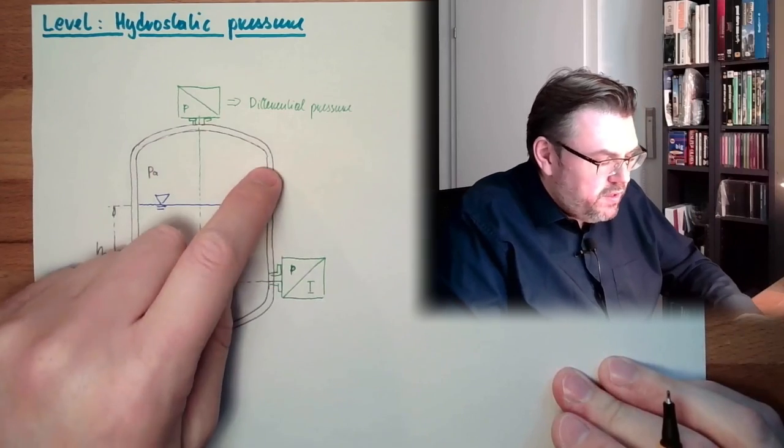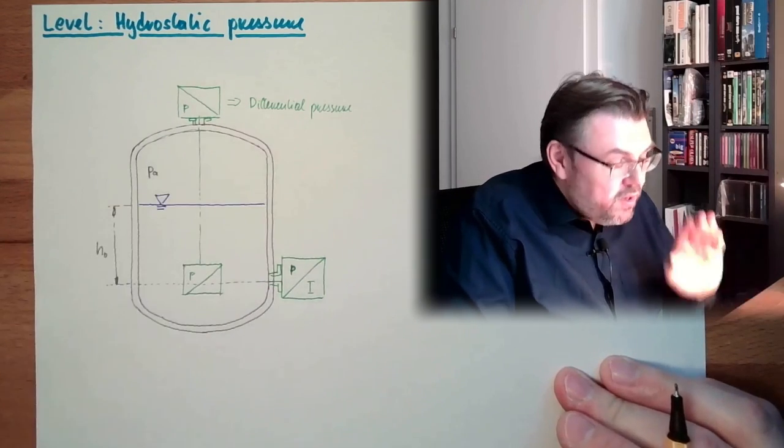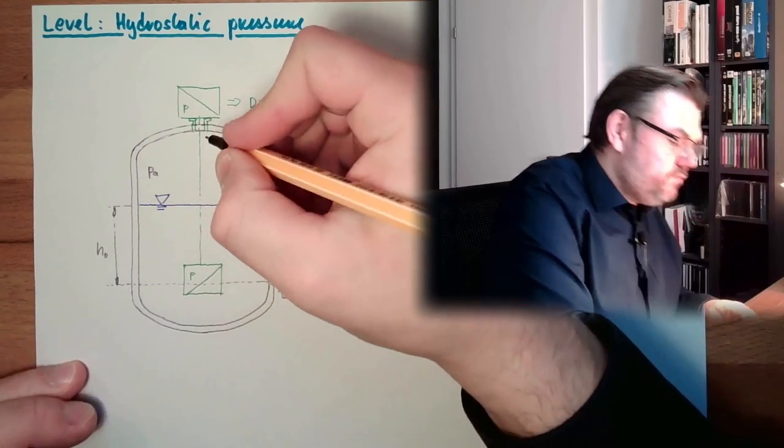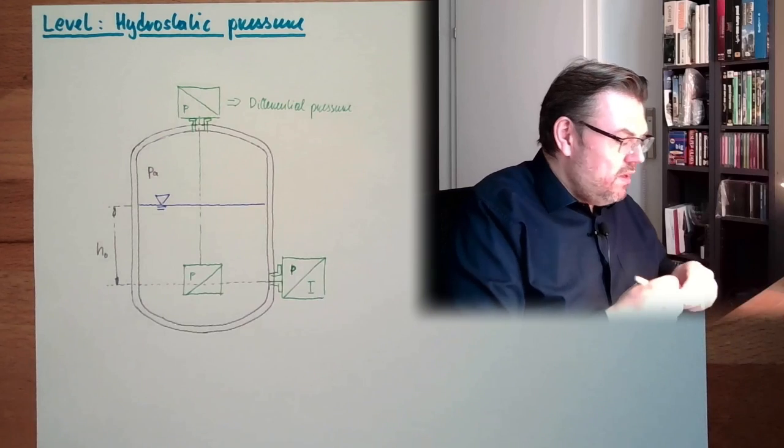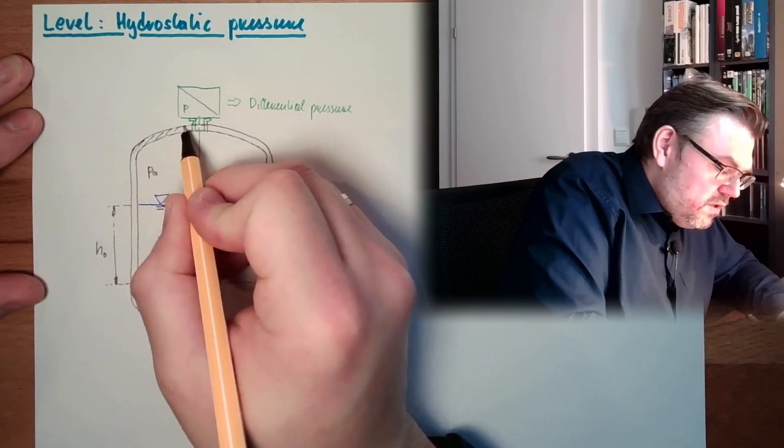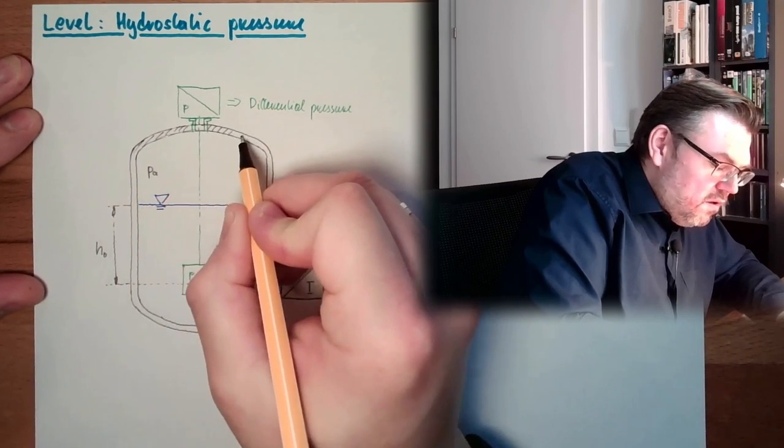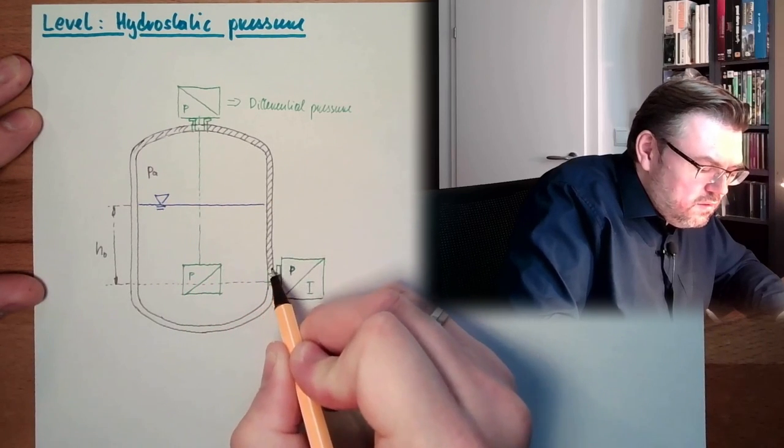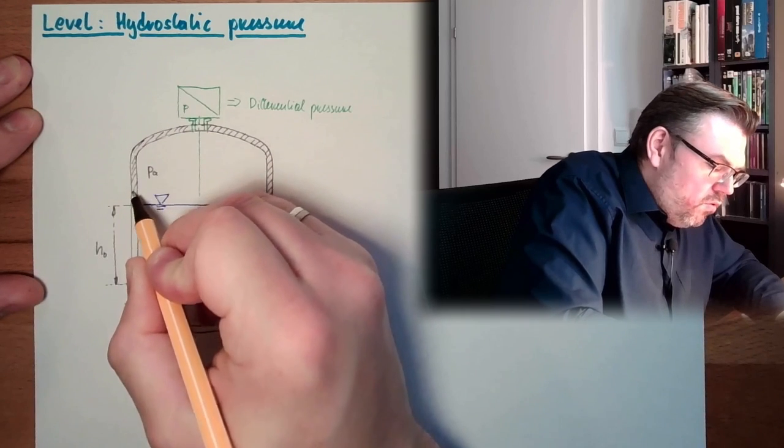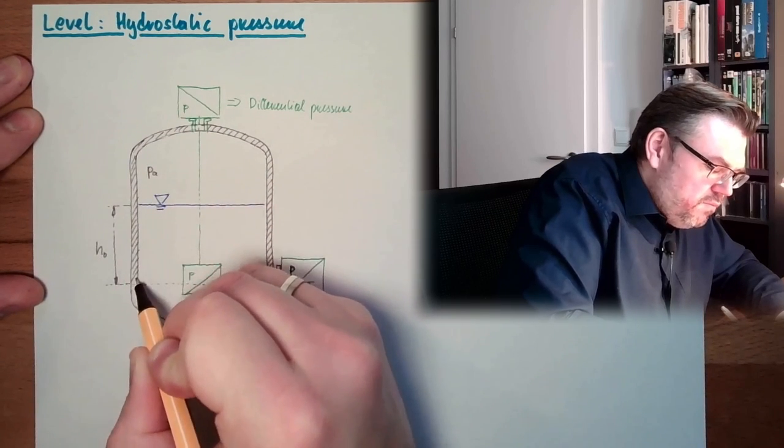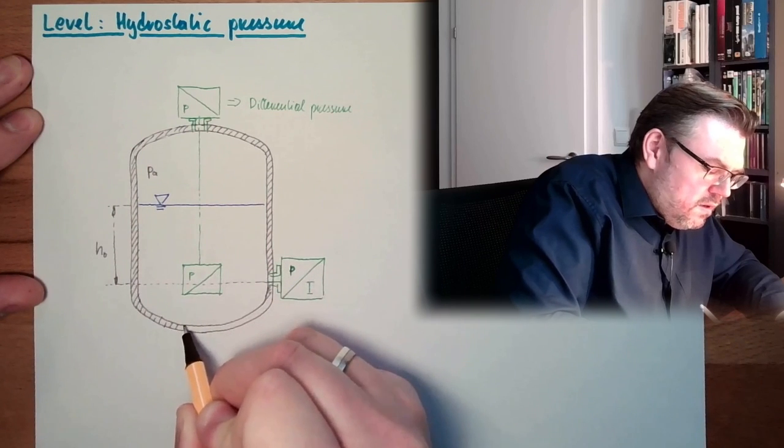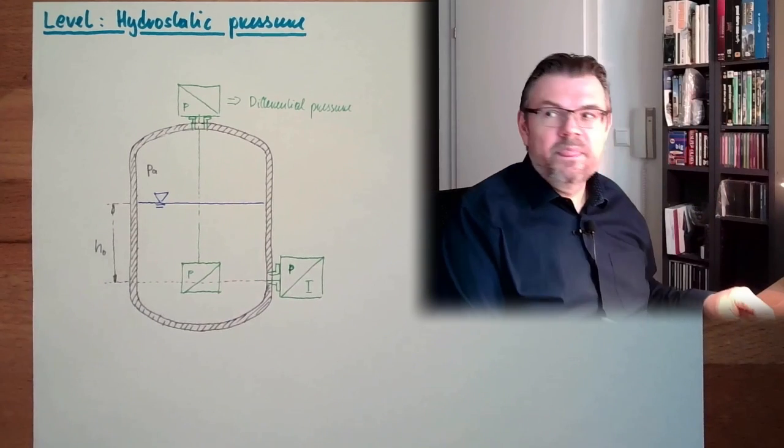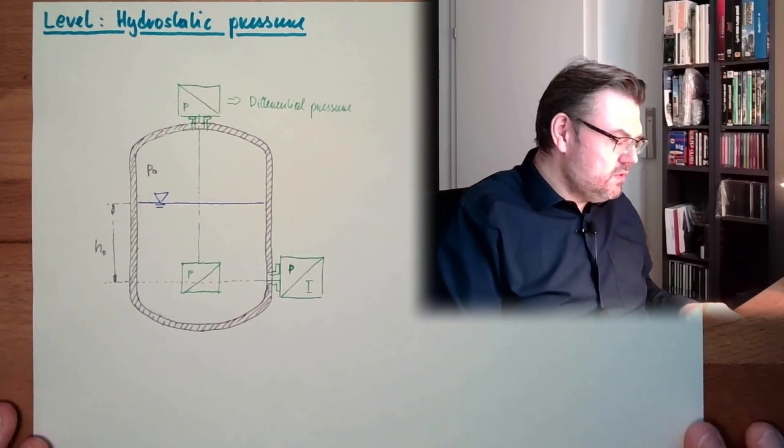We could also measure here a second time and make the differential pressure. And so that there are several possibilities to do this. So this is how this is working. So just measure the pressure. And because of the density, the weight of this, we know the hydrostatic pressure which should be in there and then we can calculate the level.